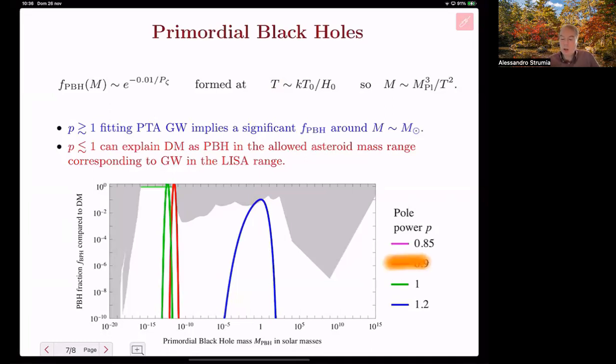A pole power below one could give black holes with asteroid-like mass in the region where primordial black holes could be all of dark matter, and the consequent gravitational waves can be probed by LISA or future experiments.